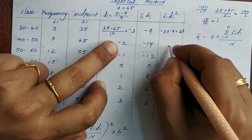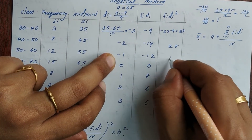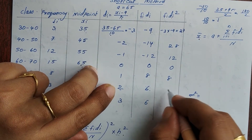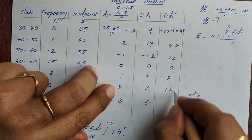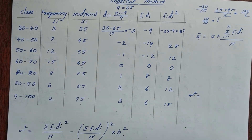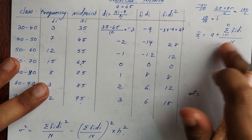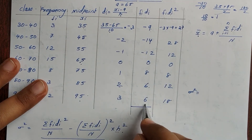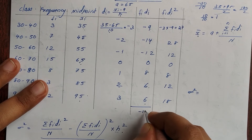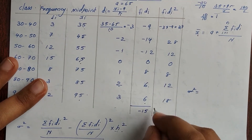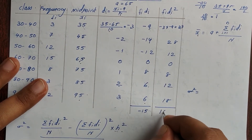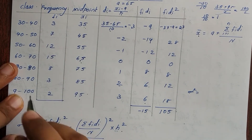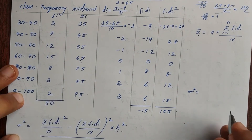For fi·di²: minus 3 into minus 9 gives 27, then 28, 12, 0, 8, 12, then more values. The sum of fi·di is minus 15, and the sum of fi·di² is 105.